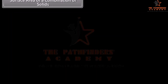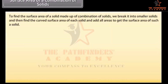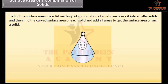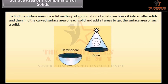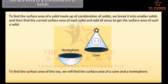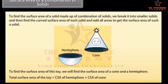To find the surface area of a solid made up of a combination of solids, we break it into smaller solids and then find the curved surface area of each solid and add all areas to get the surface area of such a solid. For example, look at this toy. This toy is a combination of a cone and a hemisphere. The total surface area of the toy equals the curved surface area of the hemisphere plus the curved surface area of the cone.